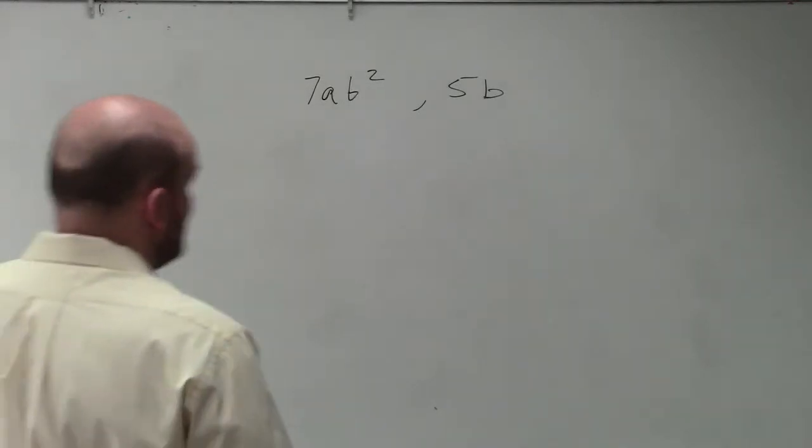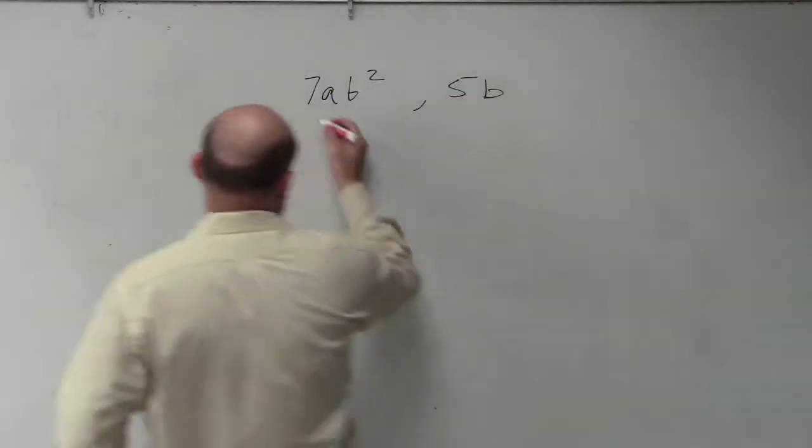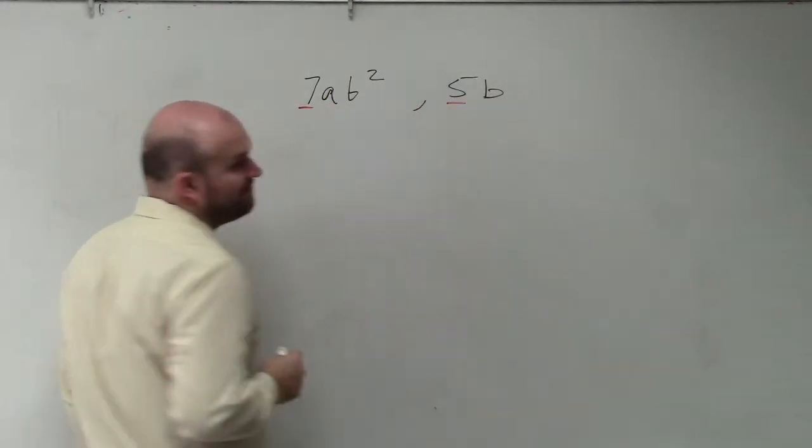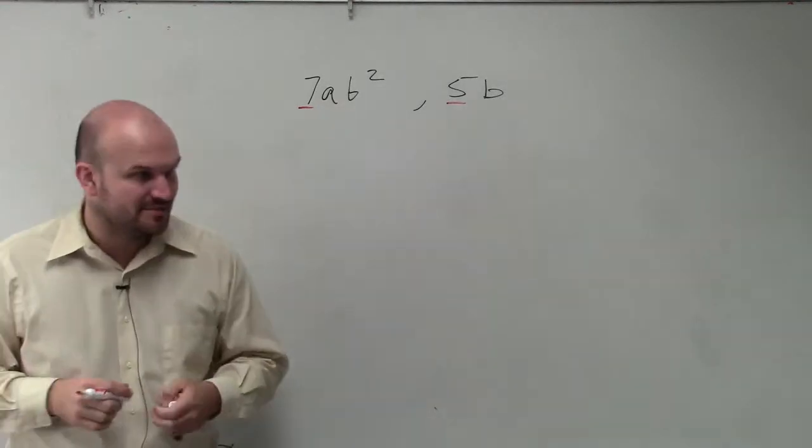So if I was trying to find the least common multiple, basically what I would do is I would look at them separately because you guys can see we have these two expressions. I have 7 and I have 5. So let's focus on the numbers first, then we'll worry about the a's and the b's.